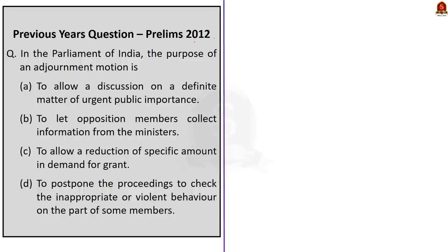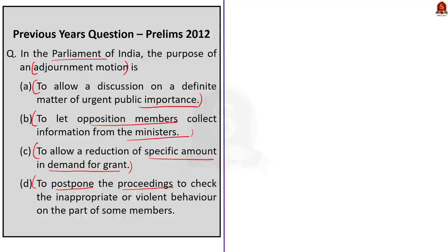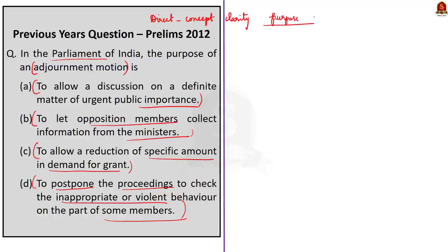Now look at this previous year's prelims question. The question goes: in the Parliament of India, the purpose of an adjournment motion is — option A: to allow a discussion on a definite matter of urgent public importance; option B: to let the opposition members collect information from ministers; option C: to allow a reduction of a specific amount in demand for grant; option D: to postpone the proceedings to check inappropriate or violent behavior on the part of some members. This is a direct question which can be answered only when our concept is clear.